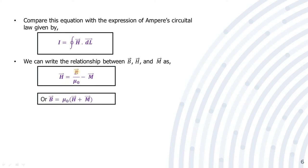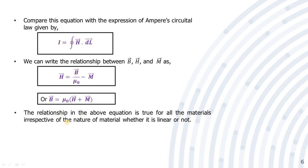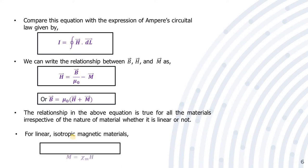Simplifying, we get B = μ₀(H + M). This relation is true for all materials, irrespective of their nature — whether linear or non-linear. For linear, isotropic magnetic materials, we can write M = χₘ · H, where χₘ is called the magnetic susceptibility. The magnetic susceptibility is the ratio of magnetization to magnetic field intensity.